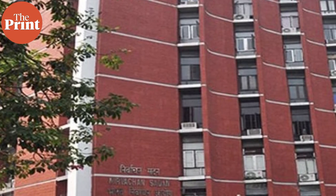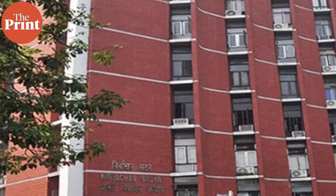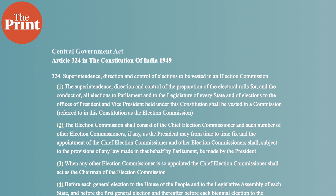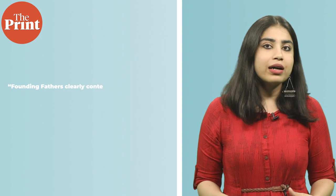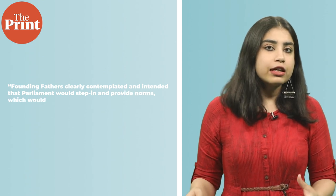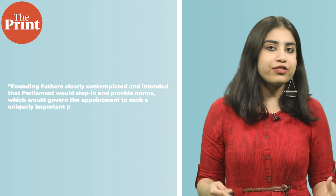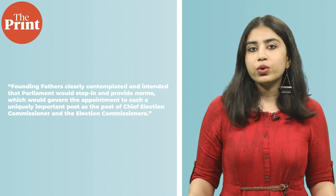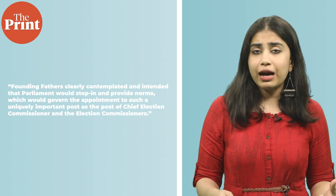It is a long, over 300-page judgment, and the court extensively looked at Constituent Assembly debates to arrive at the verdict. It noted that during the debates, the words 'subject to the provisions of any law made in that behalf by Parliament' in Article 324 were added deliberately after discussions. The court concluded that the founding fathers clearly contemplated and intended that Parliament would step in and provide norms governing the appointment to the uniquely important post of Chief Election Commissioner and Election Commissioners. The court also looked at other articles in the Constitution that used the words 'subject to any law to be made by the Parliament,' including provisions related to powers of the Supreme Court, High Courts, and establishing the SC/ST and backward classes commissions.